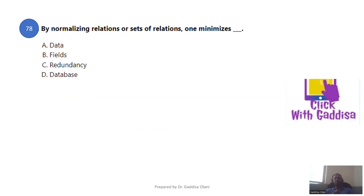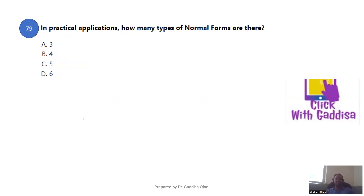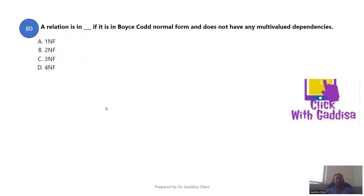Normalization can be done by removing duplicate data. In practical applications, there are four types of normal forms: first, second, third, and fourth. A relation is in fourth normal form if it is in Boyce-Codd normal form and does not have multivalued dependency.